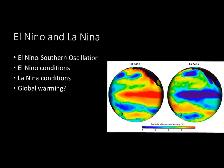That carries us into the El Niño and La Niña effects. Let's start with the definition of the El Niño-Southern Oscillation — basically a systematic shift in atmospheric pressure, sea surface temperature, and ocean circulation in the tropical Pacific Ocean.